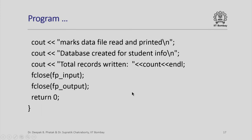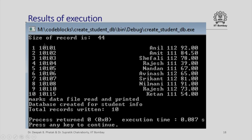Let us look at the execution of this program. First it outputs the size of record, which is 44. Next, it outputs each record with a count, so we see record numbers 1 through 10. We knew there were 10 records, and all 10 have been read and written. At the end, the messages say 'marks data file read and printed', 'database created for students', and 'total number of records written: 10'. Our program has worked correctly and has created a database file.